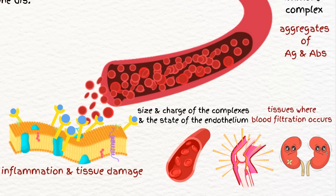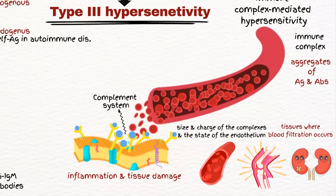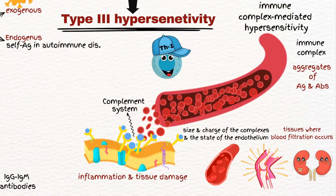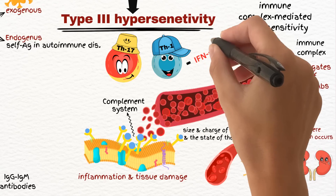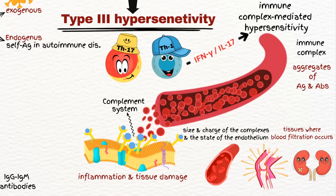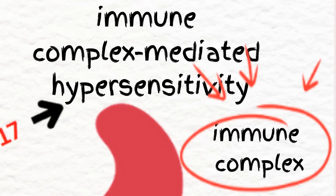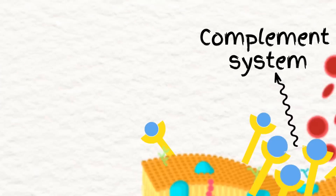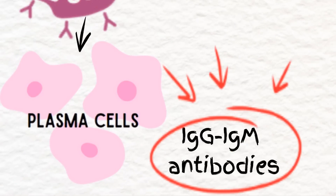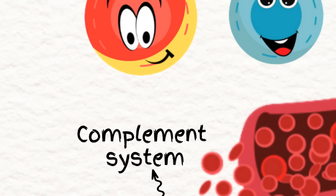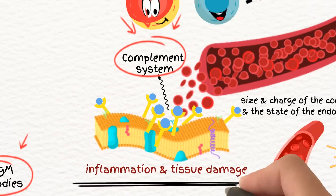The deposited immune complexes activate the complement system, a group of proteins that enhances the ability of antibodies and phagocytic cells to clear pathogens and damaged cells. This process involves T-helper 1 and T-helper 17 cells, which secrete cytokines like interferon gamma and interleukin-17, promoting a distinct type of immune response. Type 3 reactions also involve antigen-antibody complexes mediated by immunoglobulin M and immunoglobulin G antibodies, and activate the complement system leading to cell destruction, similarly to type 2.